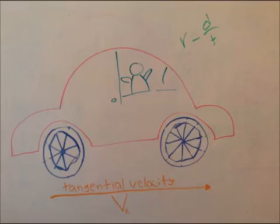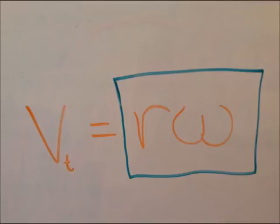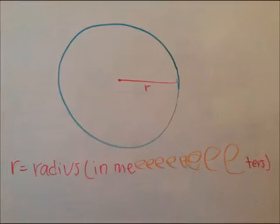You all know about linear motion, but did you know that it's a part of rotations? It's tangential velocity, V of T, it's R omega. R is radius in meters.